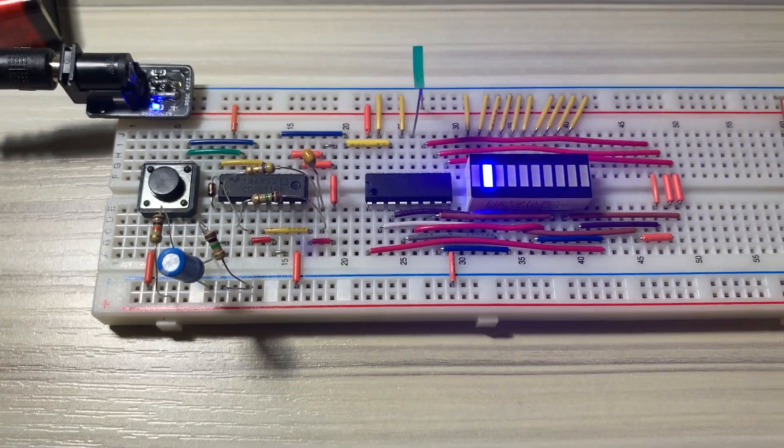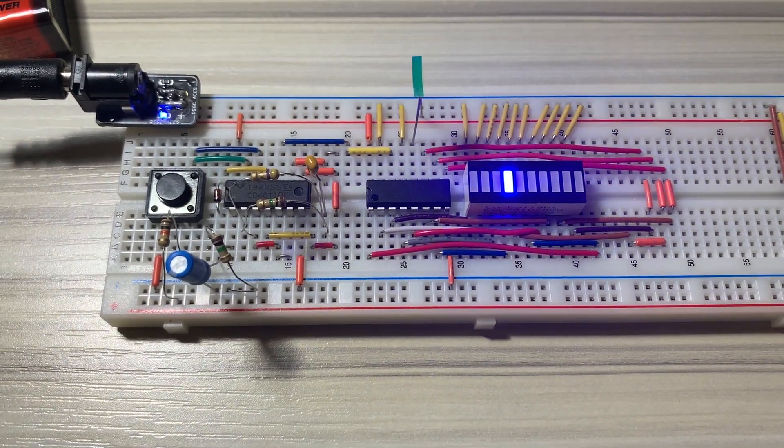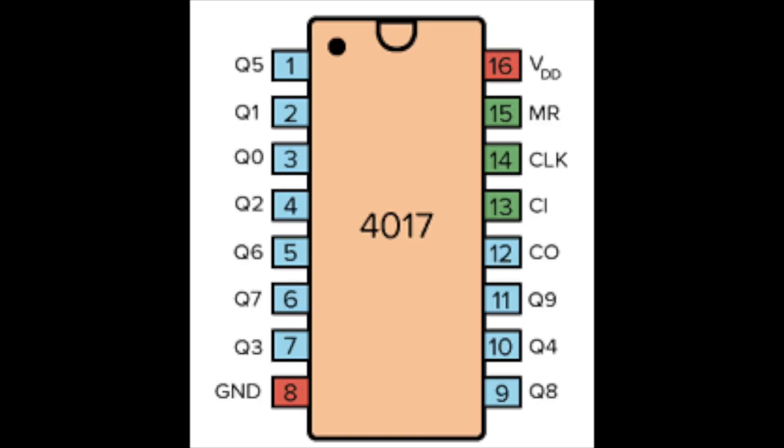This is the decade counter. This chip takes the clock input and counts the clock pulses generated by the NAND gate oscillator. This counter has 10 outputs, Q0 to Q9. Pin 15 is the reset pin. It should be low for normal operation. When high, the count restarts to 0. Pin 14 is the clock input pin. The output from the oscillator is wired here.